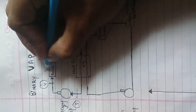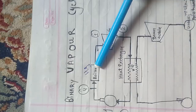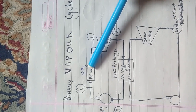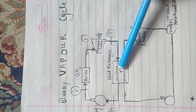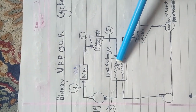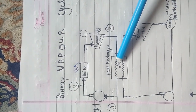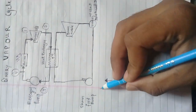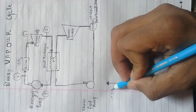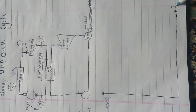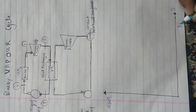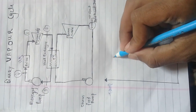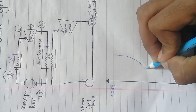Here is the mercury boiler. The normal boiling point of mercury is about 356.73 degrees centigrade, and the normal boiling point of water is about 200 degrees centigrade. Here is our temperature-entropy diagram, and here is our cycle for mercury.